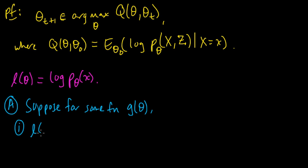First, l(theta) is an upper bound. l(theta) is greater or equal to Q(theta, theta_0) plus g(theta_0) for any theta and theta_0. And also, second property,